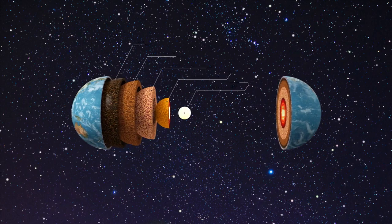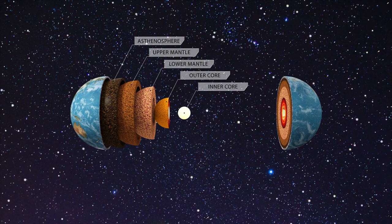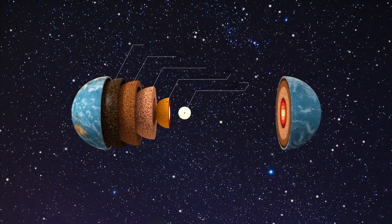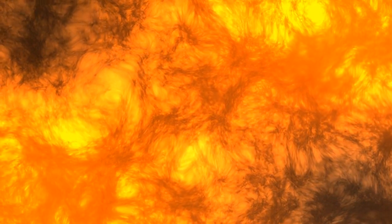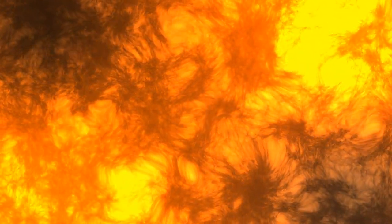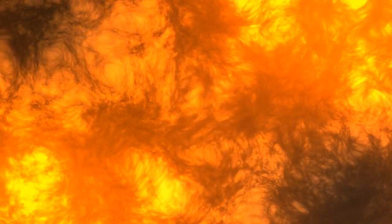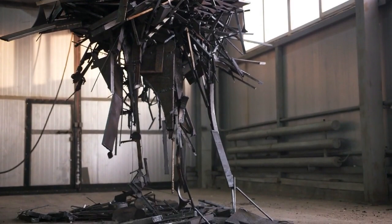The outer core is a layer of liquid iron and nickel situated beneath the mantle. Extending from approximately 1,800 miles (2,900 kilometers) to 3,200 miles (5,150 kilometers) below the Earth's surface, the outer core experiences extremely high temperatures and pressures, leading to its molten state. This layer is responsible for generating the Earth's magnetic field through the movement of conductive metals.